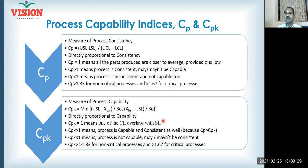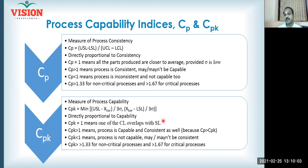CPK is a measure of process capability. The mathematical formula is: CPK = minimum of (USL minus x-bar) divided by 3-sigma, or (x-bar minus LSL) divided by 3-sigma. CPK measures the position of the process average, x-bar, with respect to the nearest specification limit — whether on the right or on the left.